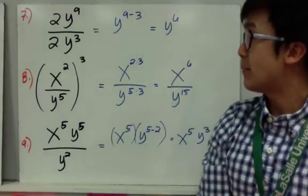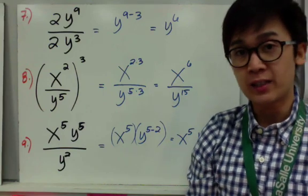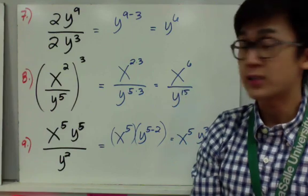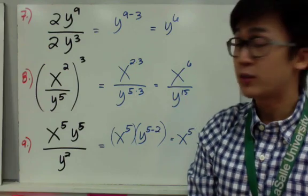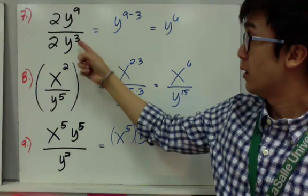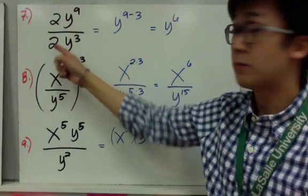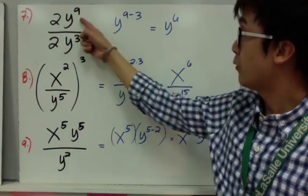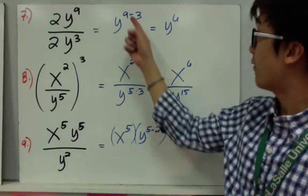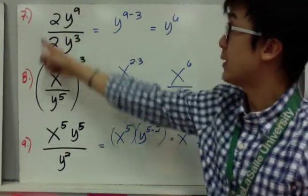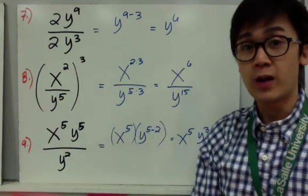We have more examples now in the form of fractions, which means division — so we use the division law of exponents. For number 7, we have 2y to the ninth divided by 2y cubed. We know 2 divided by 2 is 1, and y raised to 9 minus 3 gives y to the sixth. So the simplest form of this fraction is y to the sixth. Just remember the law, apply it, and you'll simplify the expression.